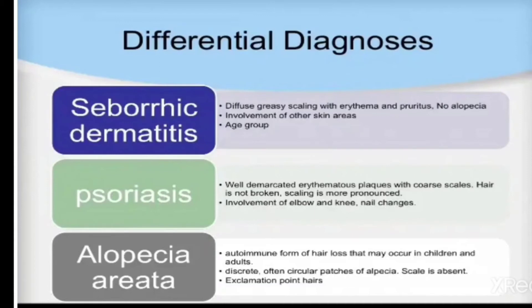In seborrheic dermatitis there is no alopecia, and it involves other skin areas. In psoriasis, there are well-demarcated erythematous plaques with coarse scales; hair is not broken and scaling is more pronounced. Psoriasis also involves the elbows and knees, with nail changes.